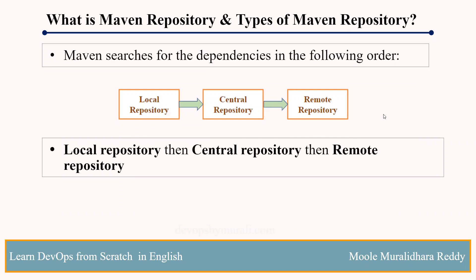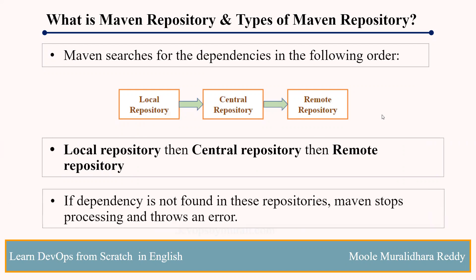First local repository, then central repository, then remote repository. If the dependency is not available in any of these three repositories, then Maven will stop the build lifecycle and throw an error — for example, that the particular plugin is not available in any of the three repositories.